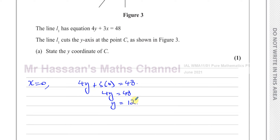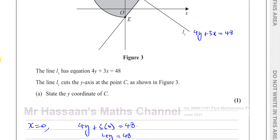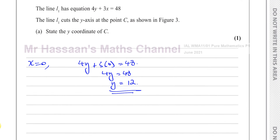So that's all they want — the y-coordinate of C. If they ask for the coordinates of C, you'd put (0, 12). Here they're asking just the y-coordinate, so the answer is y equals 12. That's the answer for part A. Now for part B.